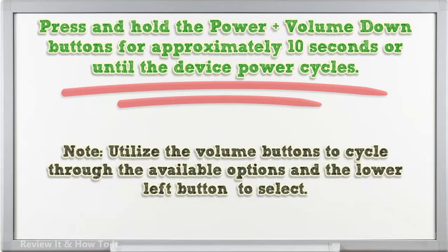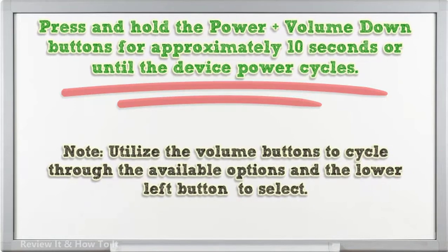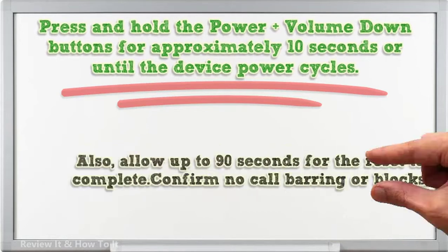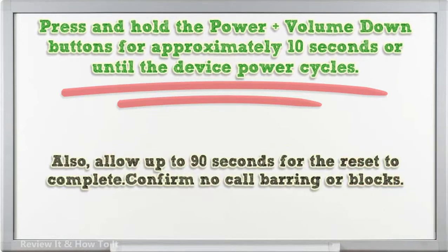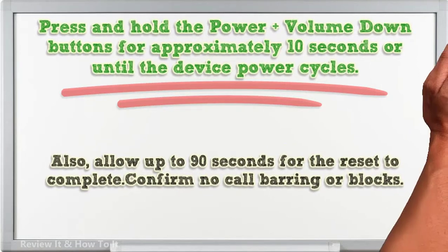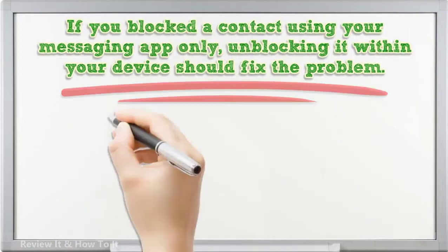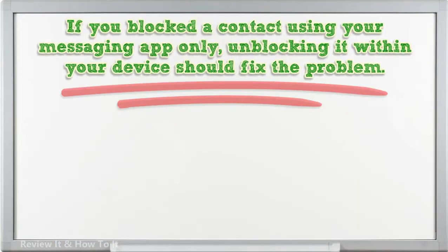Note: utilize the volume buttons to cycle through the available options and the lower left button to select. Allow up to 90 seconds for the reset to complete. Confirm no call barring or blocks. If you blocked a contact using your messaging app only, unblocking it within your device should fix the problem.